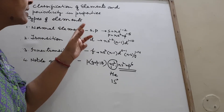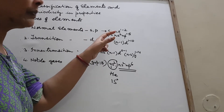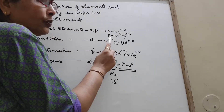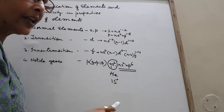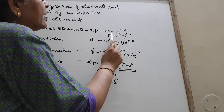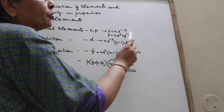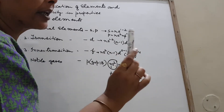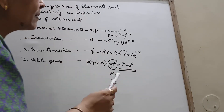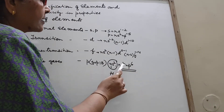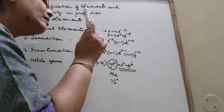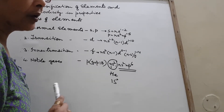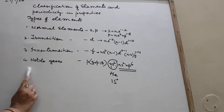Remember, this configuration NS2, NP1 to 5 is only for normal elements that belong to P block. They will have at most 2 plus 5, that is 7 electrons. They cannot have 8, because the moment it is NS2, NP6 — that is 8 electrons — they would belong to P block but would not be called normal elements. Because octet complete means they will be noble gases.